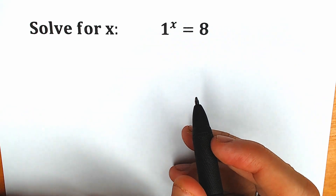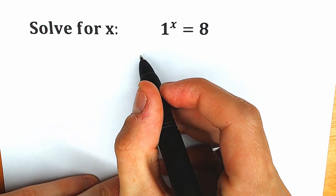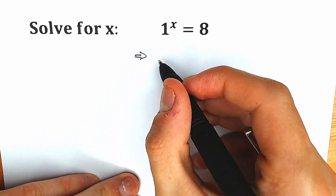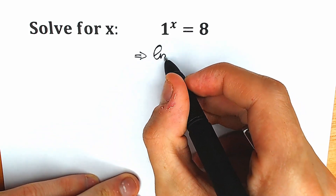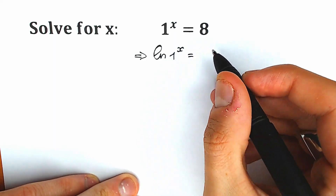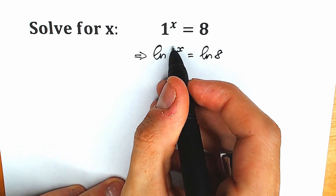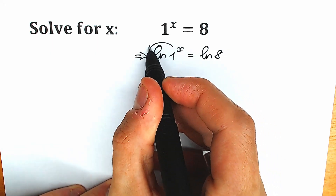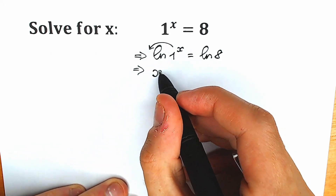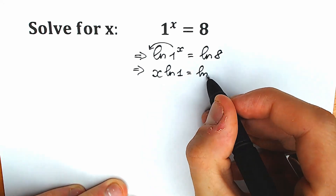A lot of students might be thinking that this is not possible. Let's apply the natural log on both sides right now. We have natural log of 1^x on the left side equal to natural log of 8. According to the log power property, the x comes down, so we have x times natural log 1 equal to natural log 8.